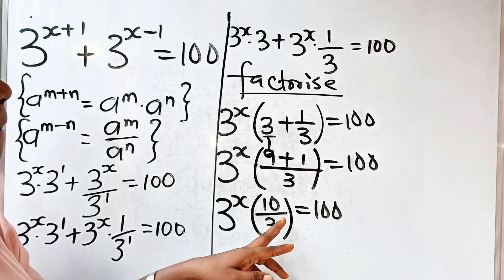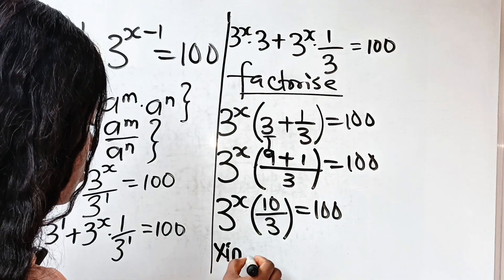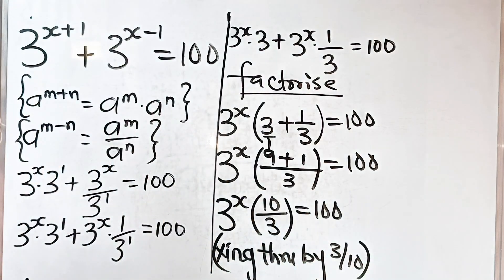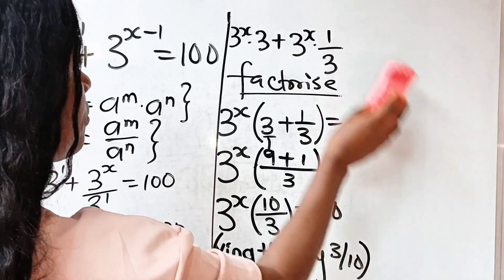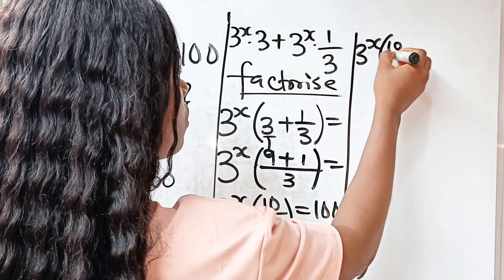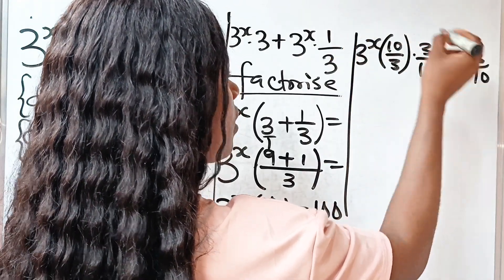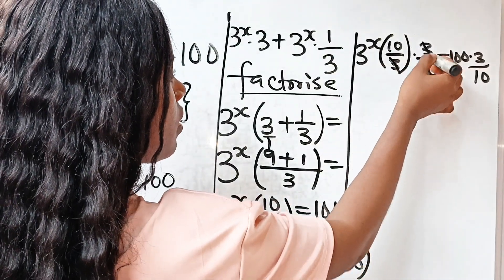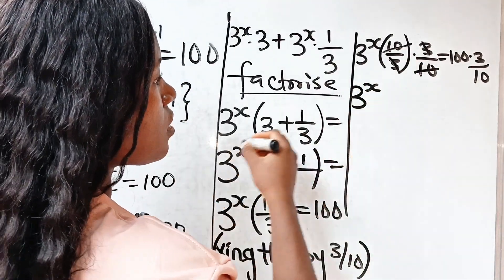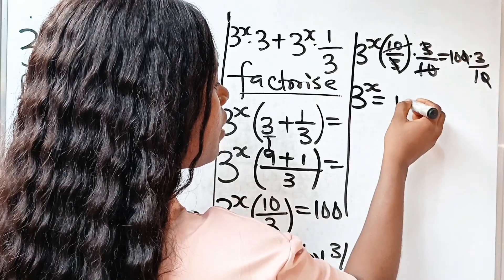Now let us multiply both sides by 3 over 10. So multiplying by 3 over 10, we have 3 to the power of x times 10 over 3, multiplied by 3 over 10, equals 100 multiplied by 3 over 10. Here 3 will divide 3 to give 1, and 10 will divide 10 to give 1 as well. So we have 3 to the power of x is equal to, on the right-hand side, 10 multiplied by 3.